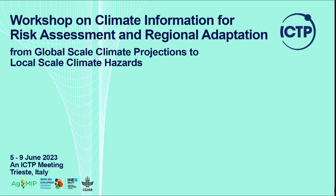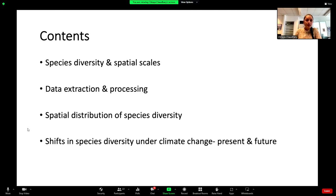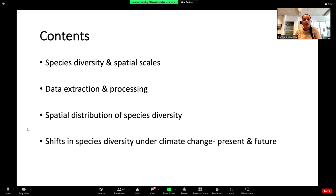I work on marine biogeography and look at the impact of climate change on the spatial distribution of marine biodiversity from global to regional scales. Today I'm going to talk about the shifts we are seeing under climate change. I'll take you through how we calculate species diversity at different spatial scales, extract and process data, look at spatial distribution across latitude, longitude, and depth, and examine how this distribution has been shifting in the past, present, and under future climatic scenarios.